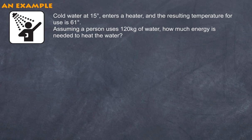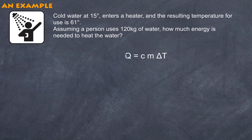Finally, let's have a look at an example where we use this formula. Let's say cold water is at 15 degrees and it enters a heater, and the resulting temperature you use is at 61 degrees. Now, assuming a person uses 120 kilograms of water, how much energy is needed to heat this water? Well, you need this formula: Q is equal to c m delta T.